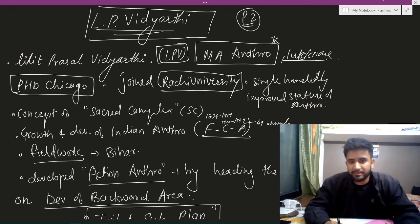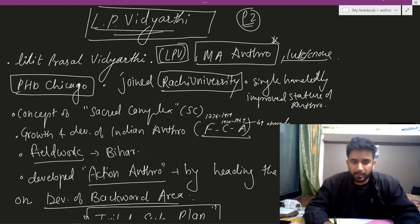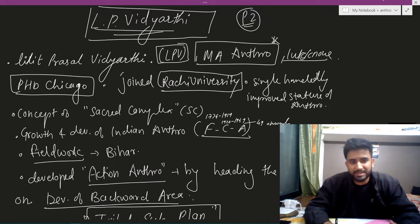At Chicago, he met his mentor Robert Redfield, who was studying the folk-urban continuum at that time. LP Vidyarthi went and studied the tribe-caste continuum — you can find the relevance of it there. He then joined Ranchi University, where he single-handedly was able to improve the status of that department and anthropology significantly.